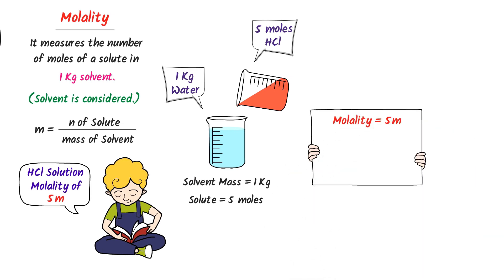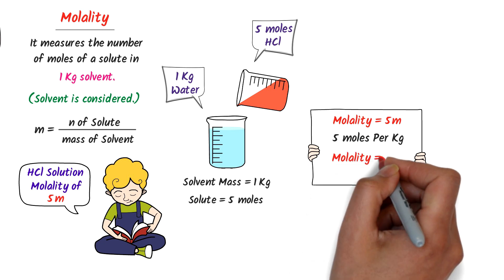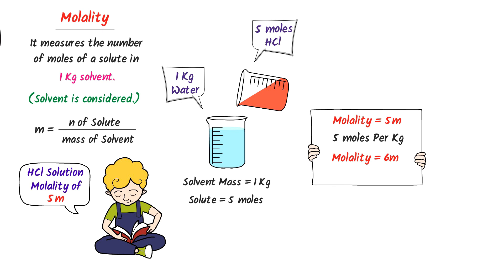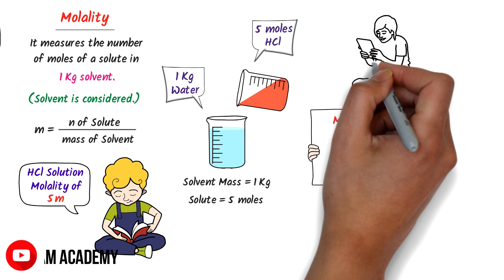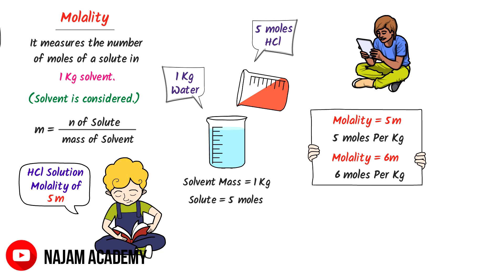Therefore, wherever you see 5 m, it means that 5 moles of solute is dissolved in 1 kg solvent. If you see 6 m, it means that 6 moles of solute is dissolved in 1 kg solvent. Thus, note down these important points about molality. In the next lecture, we will learn the easy trick to calculate molarity and molality.